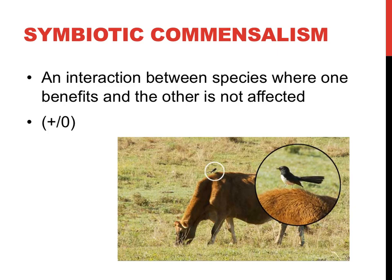Symbiotic commensalism falls somewhere between mutualism and parasitism. One organism benefits while the other neither benefits nor is negatively affected — hence the plus-zero representing neutral on this slide. An example could be a bird on a cow's back: while the cow stirs up insects for the bird to eat, the bird does no real harm nor good for the cow. If the bird happened to pick off parasitic insects from the cow's back, however, this might provide an excellent example of symbiotic mutualism.